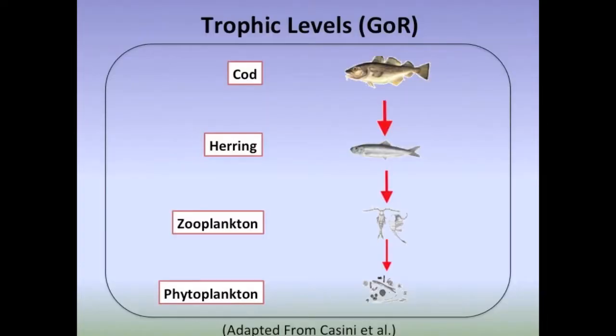A trophic level is a feeding level in an ecosystem. The predator-prey relationships are as follows: cod eat herring, herring eat zooplankton, and zooplankton eat phytoplankton. The prey is a part of the predator's environment. The predator dies if it cannot get food, and so it evolves as the prey evolves. This creates an indirect mutualism between cod and zooplankton, as well as herring and phytoplankton.